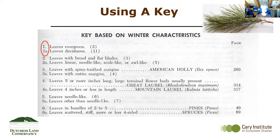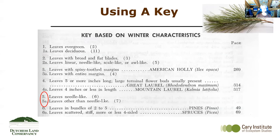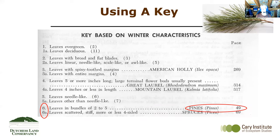Looking at the shape: are they broad and flat, or are they linear, needle-like, scale-like, or awl-like? These look needle-like, which takes us to question five. The next question is, is it needle-like or other than needle-like? These look needle-like, so that takes us to number six. Now I'm looking at how those leaves are arranged on the twig. If you had this in your hand, you would be able to see these leaves are arranged in bundles of five — and so that tells you it's a pine. In this key, you would go to page 49, which would allow you to figure out exactly which species of pine it is.